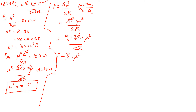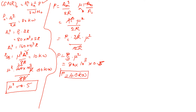Substituting PC equal to 80 kilowatt and mu square equal to 0.5: P equals 80 times 10 raised to 3 times 0.5. After solving, P is equal to 40 kilowatt.